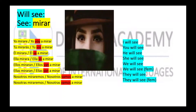For example, 'mirar' in future: yo miraré, tú mirarás, él mirará, ella mirará, ellos mirarán, ellas mirarán, nosotros miraremos. The other way: yo voy a mirar, tú vas a mirar, él va a mirar, ella va a mirar, ellos van a mirar, ellas van a mirar, nosotros vamos a mirar, nosotras vamos a mirar.